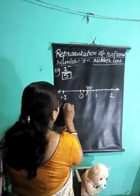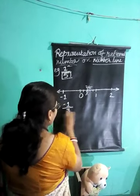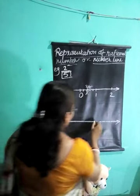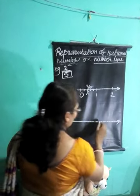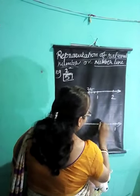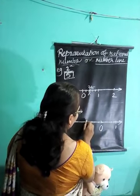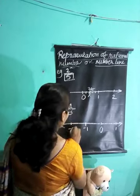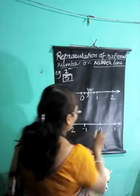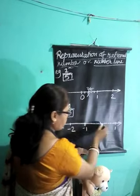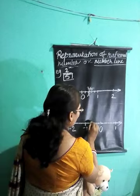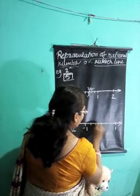Now let us take another number, that is minus 1 by 3. Draw a number line. This is a negative number, so here 0, here 1, here minus 1, here minus 2. Now the denominator is 3, so on the negative side, between 0 and minus 1, we will be dividing it into 3 equal parts.